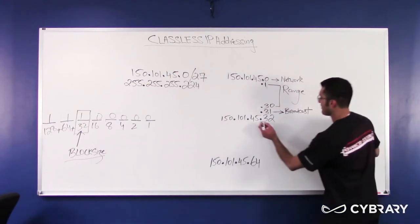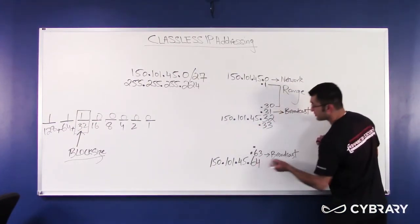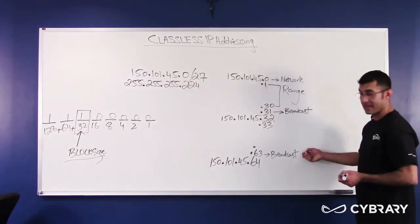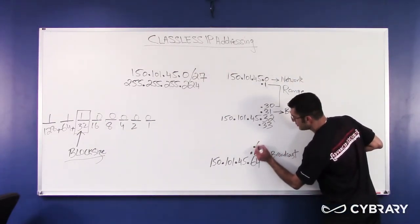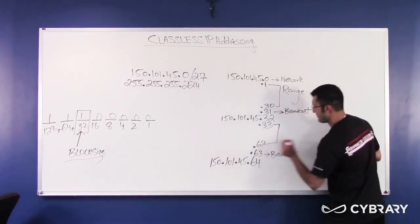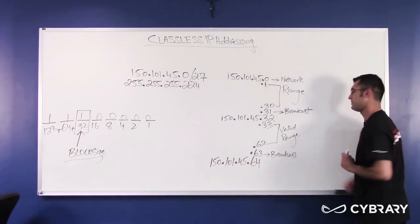Again, the next street over, my first valid would be 33. My last possible address would be dot 63, which is my broadcast. My last valid address, which is assignable, would be 62. And my range is, again, total of 30 addresses. This would be my valid range.